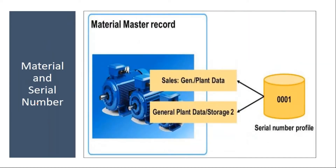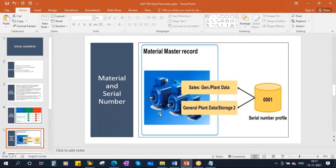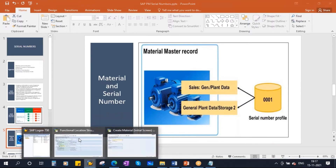To manage the equipment with serial numbers, you should have a serial number profile. This serial number profile should be assigned in the material master record of that particular equipment. So the prerequisite is: you need to create those equipments as material in the system. Now let us go to the system and create the material.